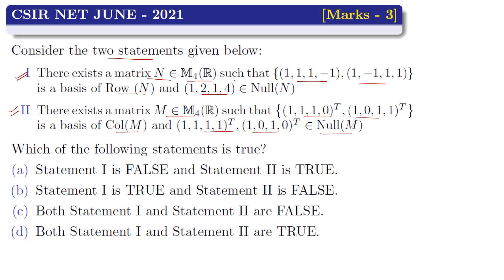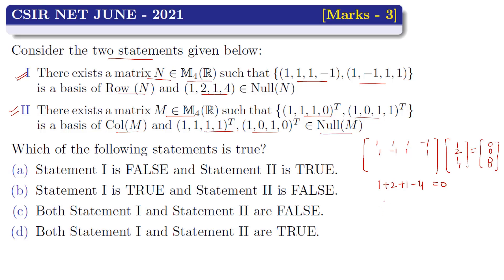For Statement 1: if the basis of row(N) consists of (1,1,1,-1) and (1,-1,1,1), then for (1,2,1,4) to be in the null space, multiplying the matrix by this vector should give zero. Checking row 1: 1 + 2 + 1 - 4 = 0 — satisfied. Checking row 2: 1 - 2 + 1 + 4 = 4 ≠ 0 — not satisfied. So the null space condition fails, and Statement 1 is false.